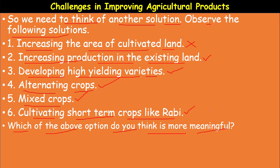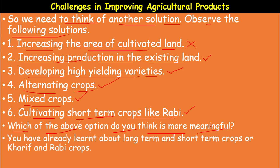Rabi crops are winter season crops sown around the month of November and harvested around April. Examples of Rabi crops include wheat, peas, gram, mustard, linseed, and barley. Short-term varieties produce more grains than long-term varieties — this is an important point. You have already learned about Kharif and Rabi crops in social studies.